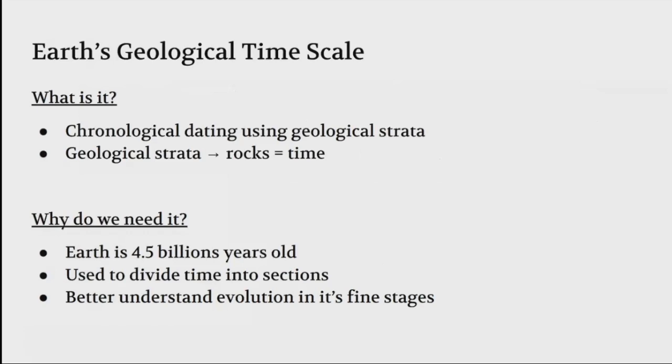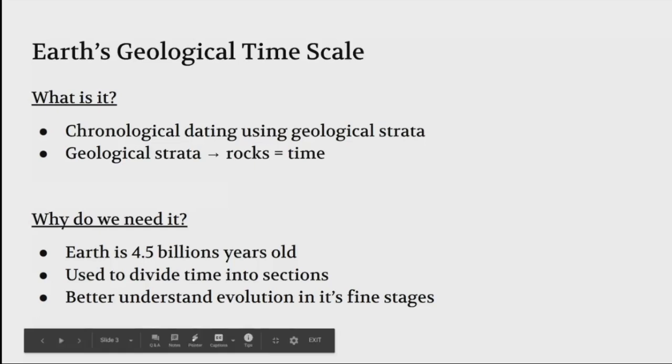The Earth's geological time scale is a chronological dating system using geological strata, layers of rock specifically, and connecting that with time to understand what layer of rock comes from what time. Since Earth is 4.5 billion years old, we need to divide sections of time so we understand how evolution works in its fine stages.